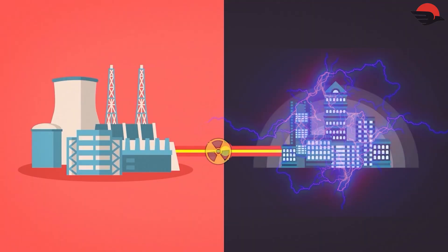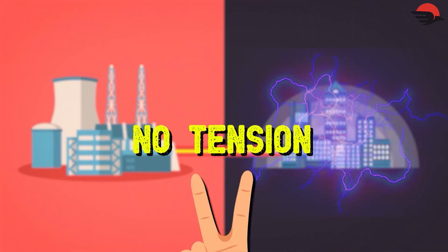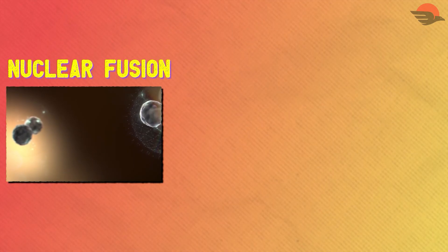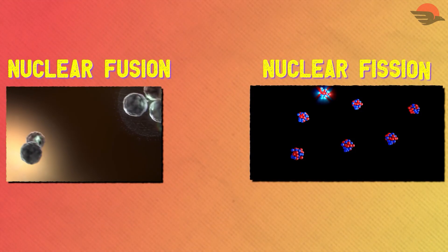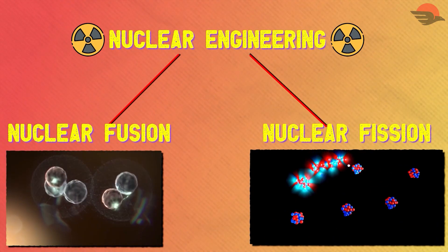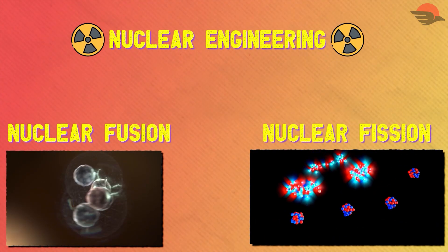To release nuclear energy for electricity, we need a method. So how do we do this? No tension — there are two ways. First is nuclear fusion, and number two is nuclear fission. Both come under nuclear engineering.